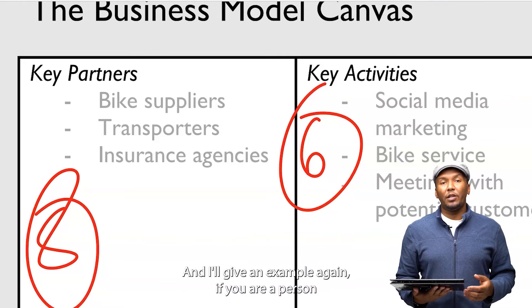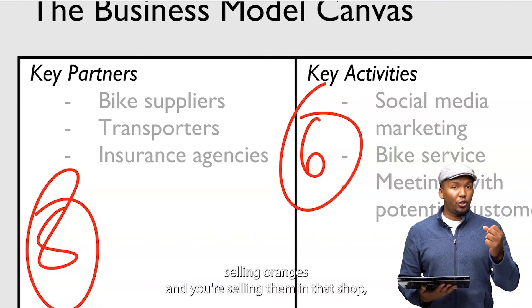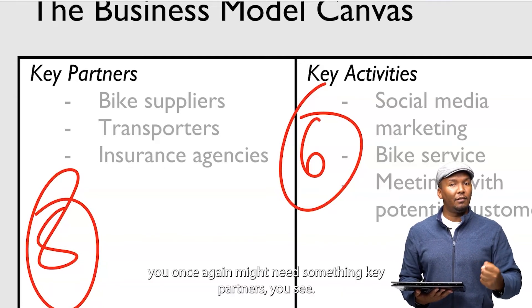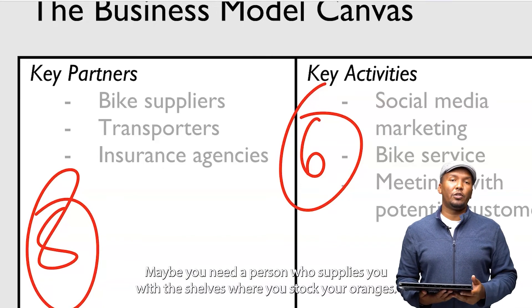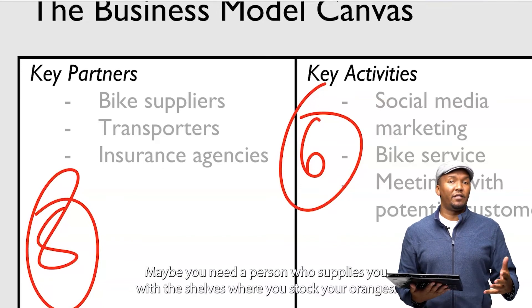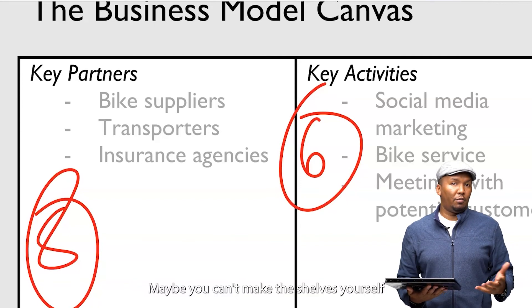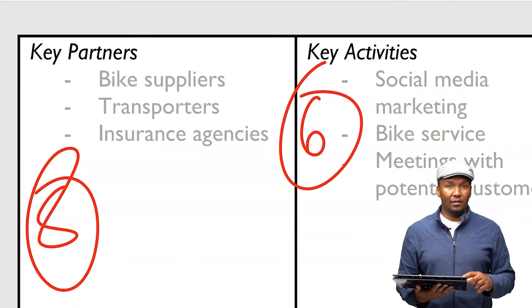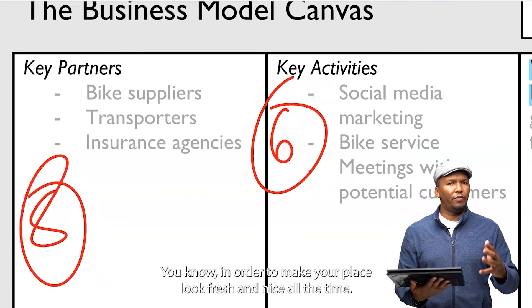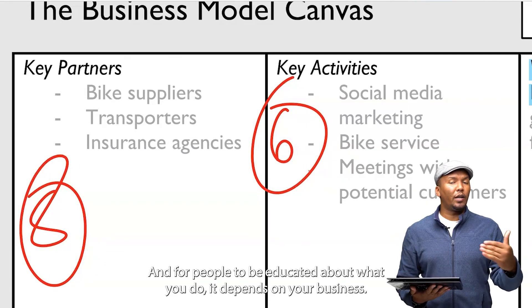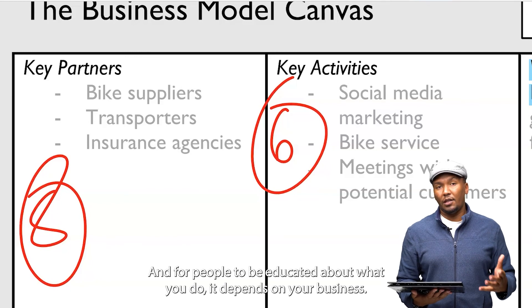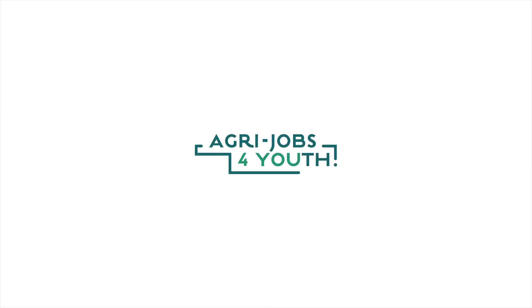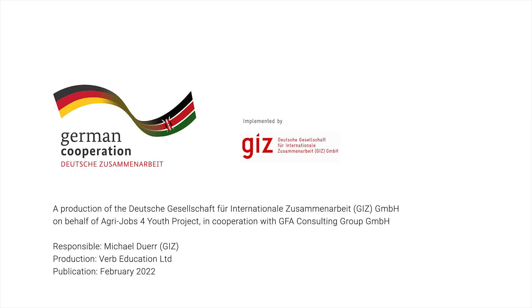For another example, if you're a person selling oranges in a shop, you might also need certain key partners. Maybe you need a person who supplies you with the shelves where you stock your oranges — you can't make the shelves yourself. Maybe you need somebody who supplies you with branding, to make your space look fresh and nice and educate people about what you do. It depends on your business.